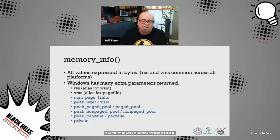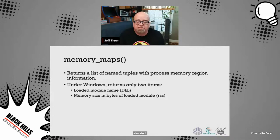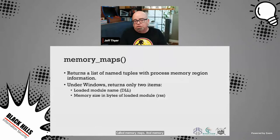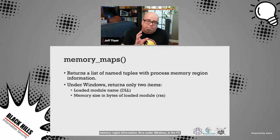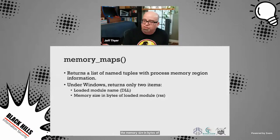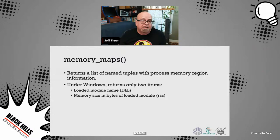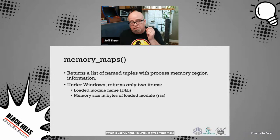There's another method called memory_maps which returns a list of named tuples with process memory region information. Under Windows in the psutil package, the memory_maps method only returns two items: the loaded module name and the memory size in bytes of that loaded module (essentially the working set of memory for that particular DLL in that particular process). In Linux it gives much more detailed information. The first implementation of psutil was more focused on Linux and has more functionality there than in the Windows space.